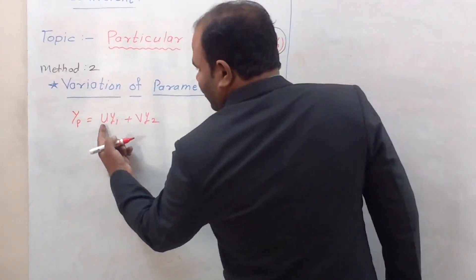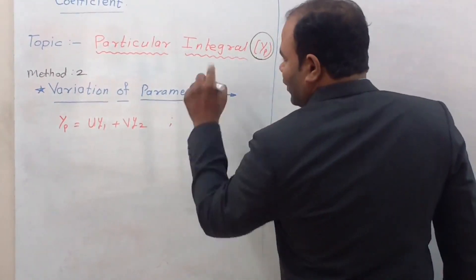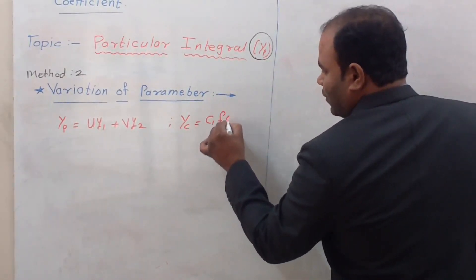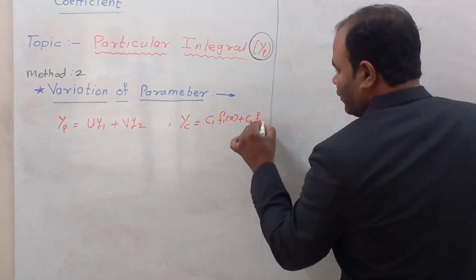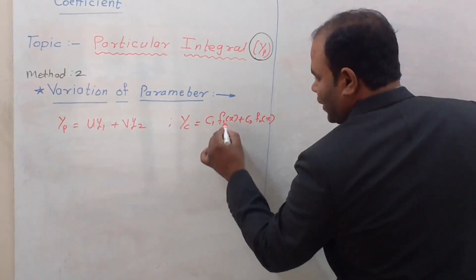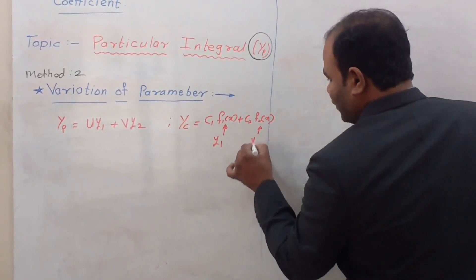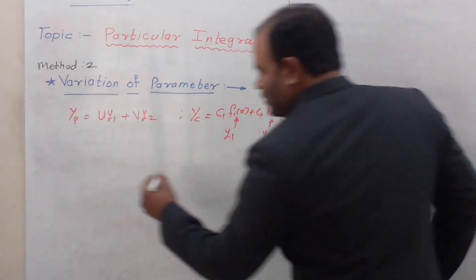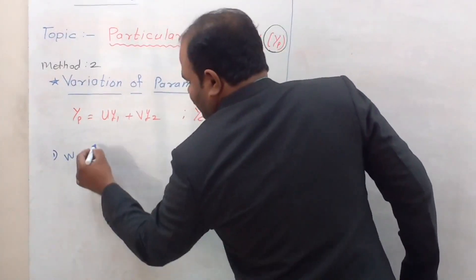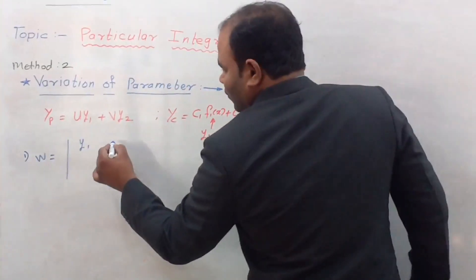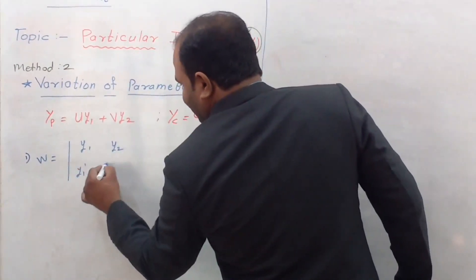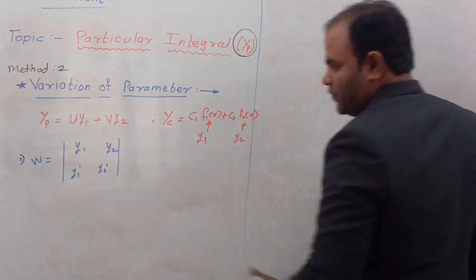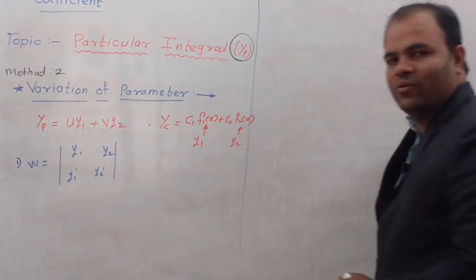We have to find out u and v. First of all, according to the differential equation we can find out yc, that is the complementary function, which is c1·f1(x) plus c2·f2(x). We consider this first function of x as y1 and this second function of x as y2. When we get the values of y1 and y2 from the complementary function, we then find out w. W is the determinant of y1, y2, y1-dash, and y2-dash. y1 and y2 are found from the complementary function; y1-dash and y2-dash are their derivatives.